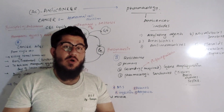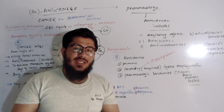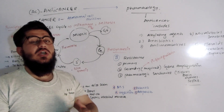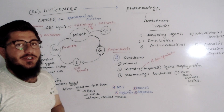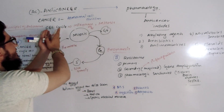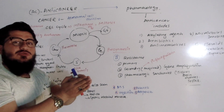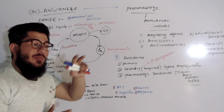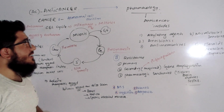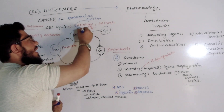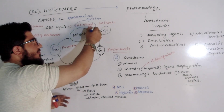First we have to understand cell division. If you remember from early biology classes, we learned about cell division — we will give a short review. Cell division, especially mitosis: we study the interphase and mitosis. We start with the interphase, then go towards mitosis. In the interphase, a cell is prepared for division so that it will divide in mitosis.